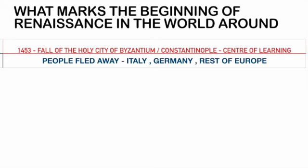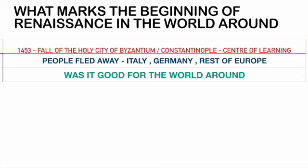So from one place, the learning spread to different parts. Was it a good thing? The attack was not good, but what happened as a consequence was a good thing — because learning that was initially concentrated in one place now spread to different parts of the world. The world would get a rebirth. That is why we call the Renaissance the rebirth of learning — we call back the classics.